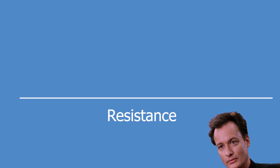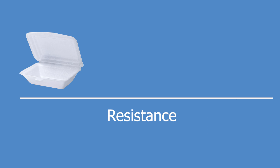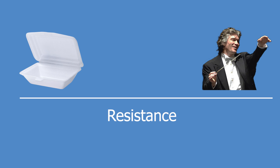Resistors limit or regulate the flow of electric current. Think about it like this: there's a continuum, and on one side there's insulators and on the other side there's conductors. A conductor's resistance is zero and a true insulator's resistance is infinite. All of the space in between is resistors, or resistance.